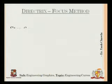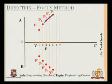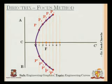Now I have the vertex and all the points above and below the axis through which the parabola passes. I'll pass a smooth curve through all these points — this smooth curve is the required parabola. So those were the four methods for construction of a parabola. Now we move on to hyperbola. For ellipse, eccentricity was less than 1; for parabola, eccentricity was equal to 1; and for hyperbola, eccentricity is greater than 1.